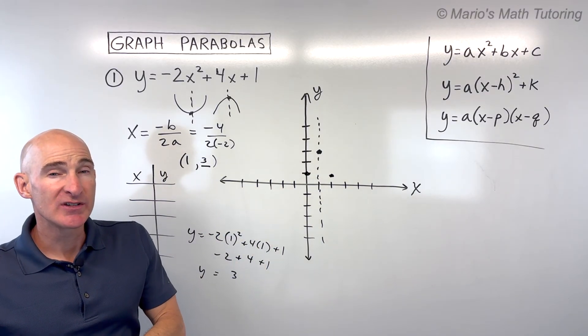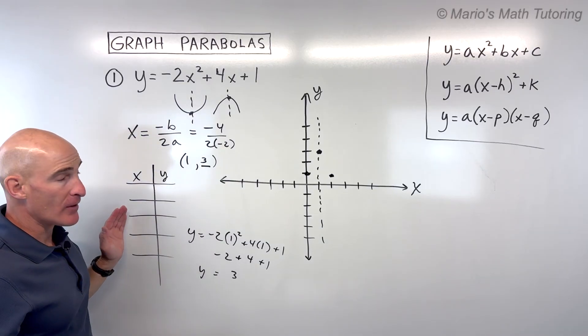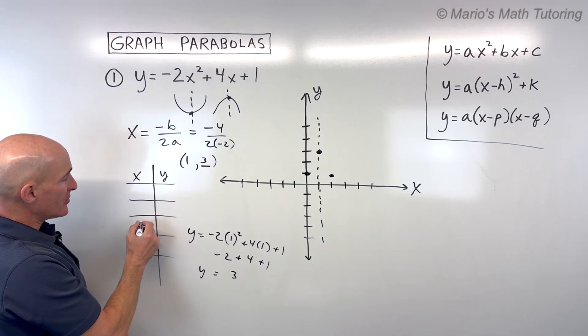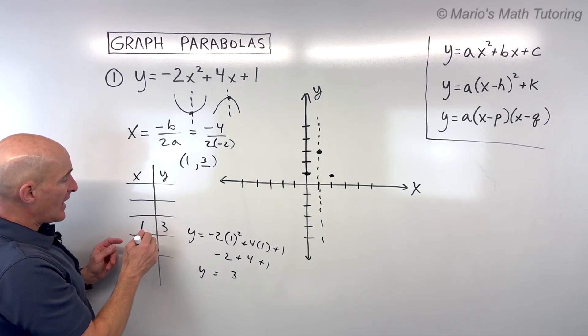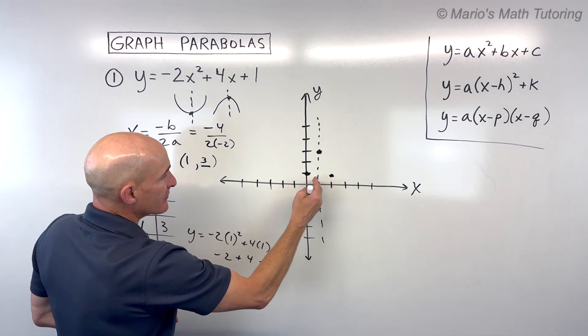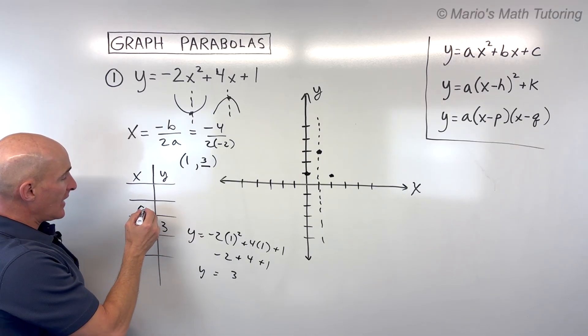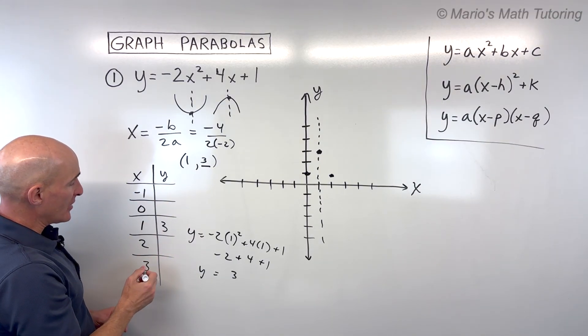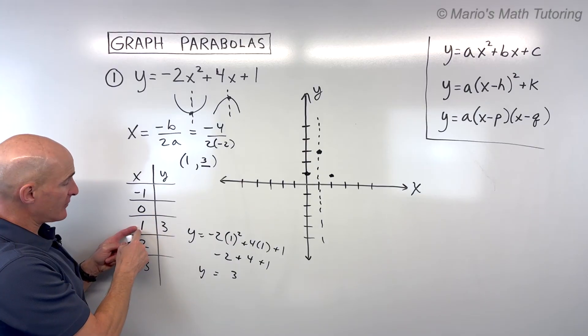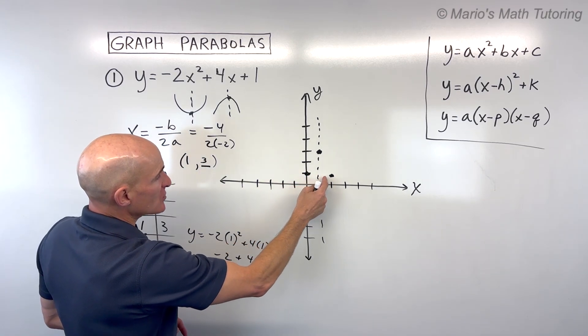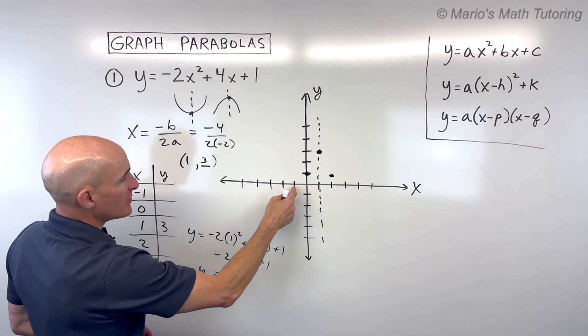Sometimes what students like to do when they're doing these problems is they like to make a table. This is another way to approach this. If you take the vertex and put it here in the middle, 1, 3, and you pick some points on either side of this axis of symmetry, for example 0 and 2, and maybe negative 1 and 3. So what I'm doing is I'm going 1 to the left, 1 to the right, or 2 to the left, 2 to the right. In this case, we already found this point that was 1 on either side. So let's go to negative 1.